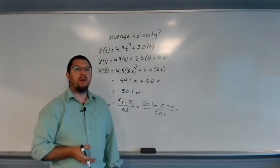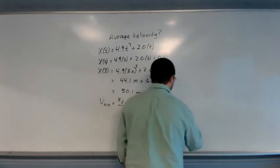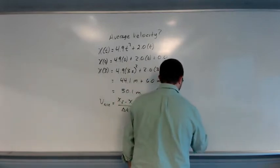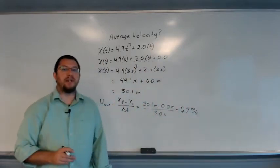If you take 50.1 and divide it by 3, you'll get 16.7, 16.7 meters per second.